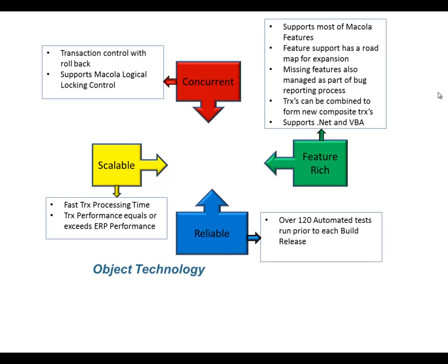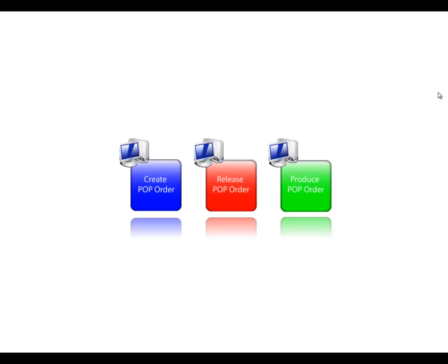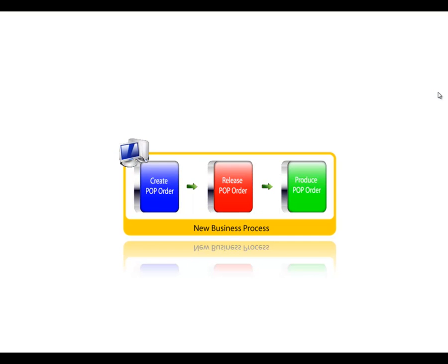The objects need to be reliable — we have over 120 automated tests that we run prior to each build release. This is what we call a composite transaction. With production order processing, if you want to effectively create, release, and report a POP order, you would normally go through multiple steps across several screens. But what if you just wanted to create the POP order, release it, and produce it all in one step? There's no single transaction in Macola to do that, so we combine all three into one business transaction, which you either commit or roll back as if it were one brand new Macola business transaction.